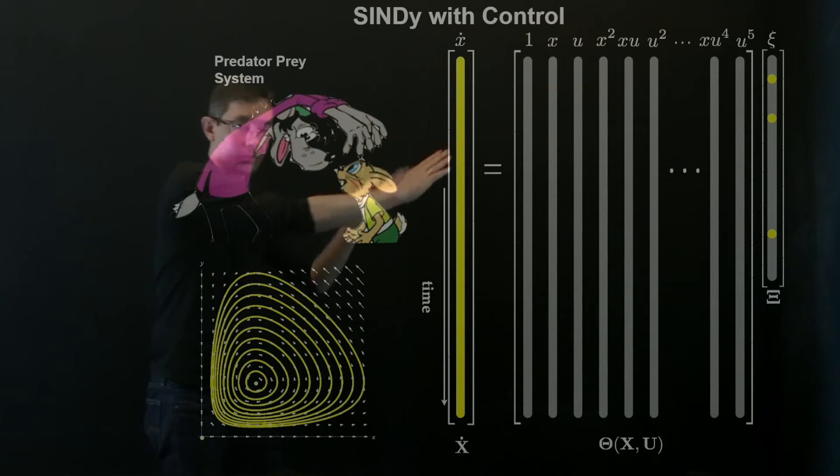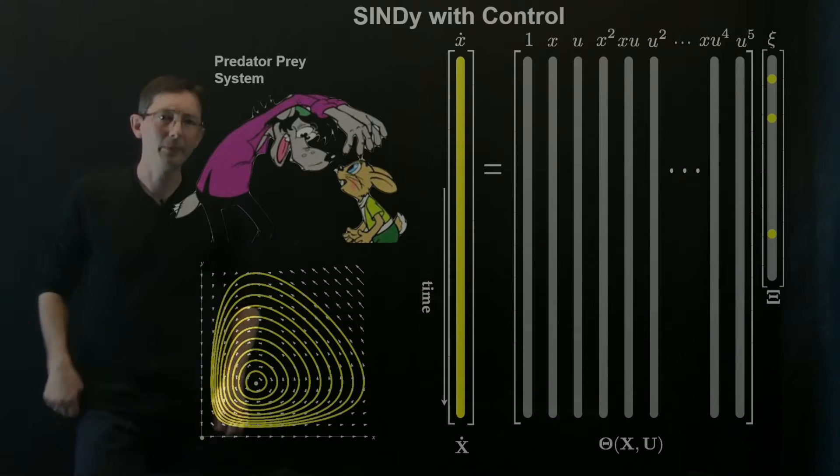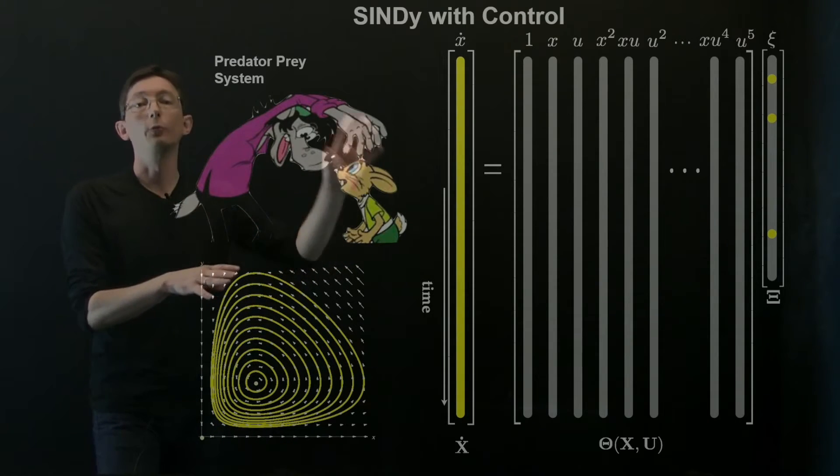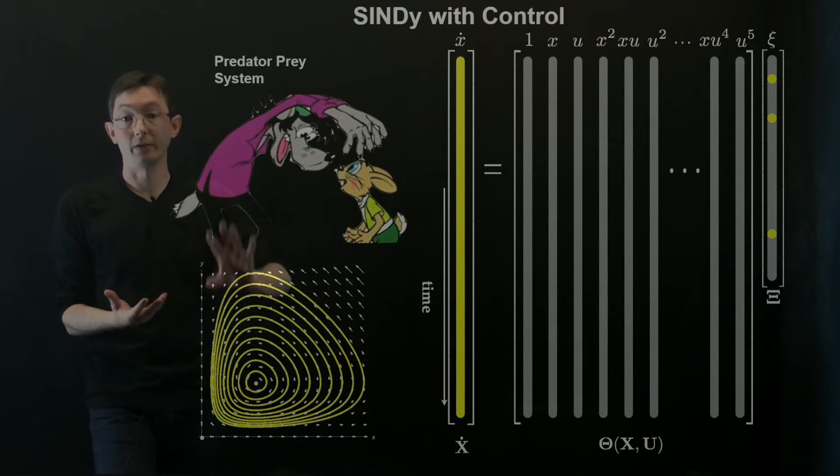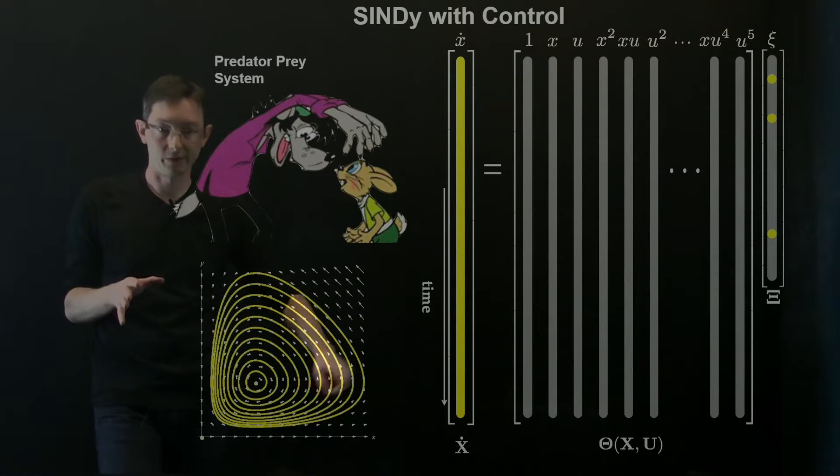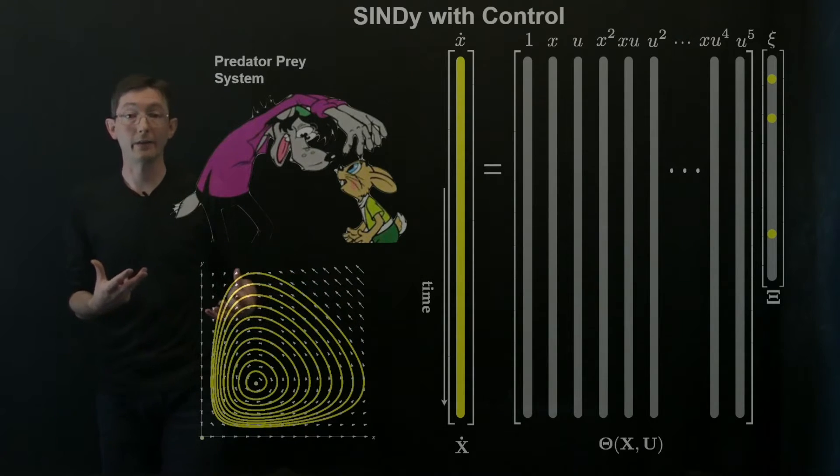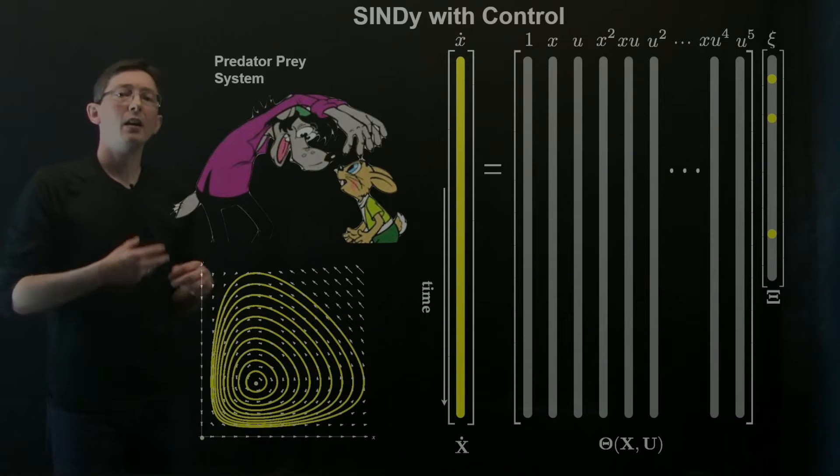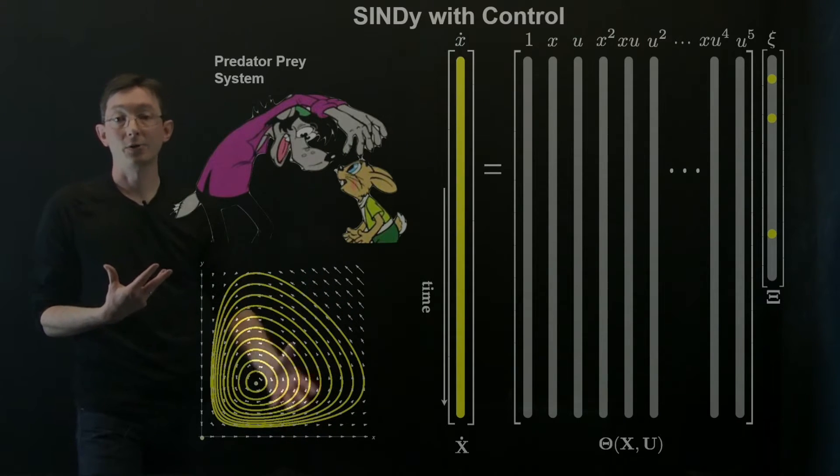The wolves eat all the bunnies so their population collapses, then the wolves have no food so they die off, then the bunnies grow and so on and so forth. So this evolves in time. What we're essentially doing is original SINDy could identify the Lotka-Volterra dynamics with no problem just from this data. SINDy could identify those nonlinear dynamics but now let's say that I have some actuation and control.